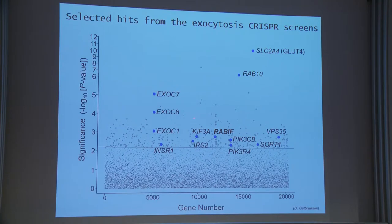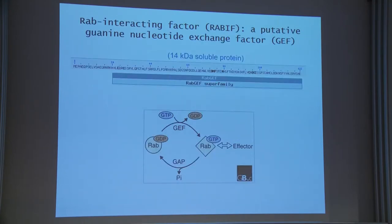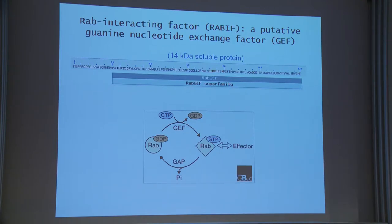Here I'm going to focus on one new factor identified in the screen called RABIF — Rab Interacting Factor. It's a very small, 14 kDa soluble protein. When I did sequence analysis, the only prediction was that it's a putative guanine nucleotide exchange factor for Rabs — a GEF for Rabs. The story of RABIF began 25 years ago with two papers published by the Peter Novick and Pietro De Camilli groups, based mostly on in vitro biochemical assays. RABIF is also known as MSS4 or DSS4 — the first putative GEF for Rab GTPases. There are about 70 Rab GTPases in the human genome, and this protein is the first putative GEF, but surprisingly, decades later its biological function was still unknown.